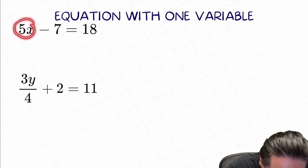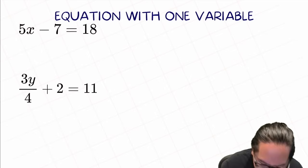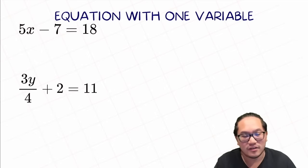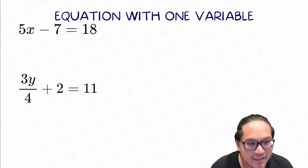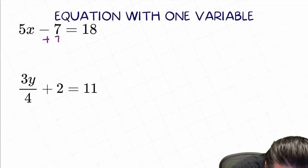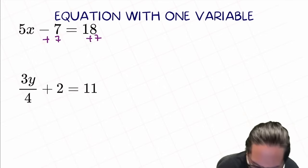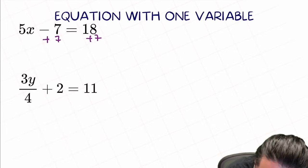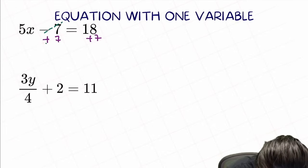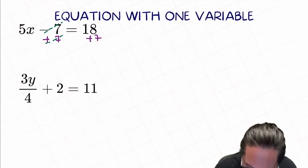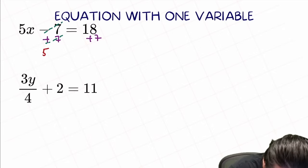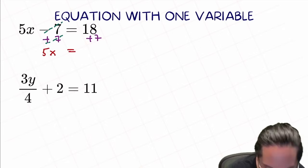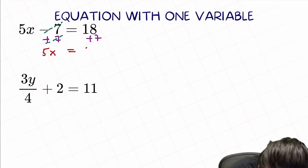Here, 5x is directly connected, but minus 7 is not directly connected. So that would be the first thing that we're trying to maneuver out. Since we have negative 7, we want to do the exactly opposite on both sides to eliminate them. So if you do plus 7 on both sides, this negative 7 will cancel the plus 7 on the left. That will change to 5x equal to 18 plus 7, equal to 25.